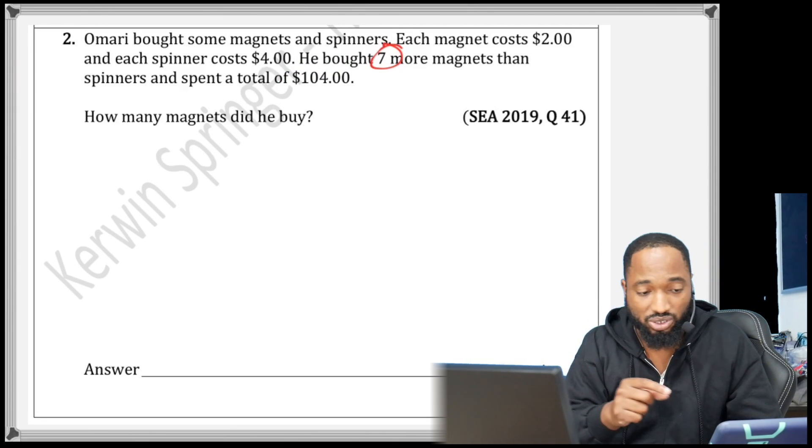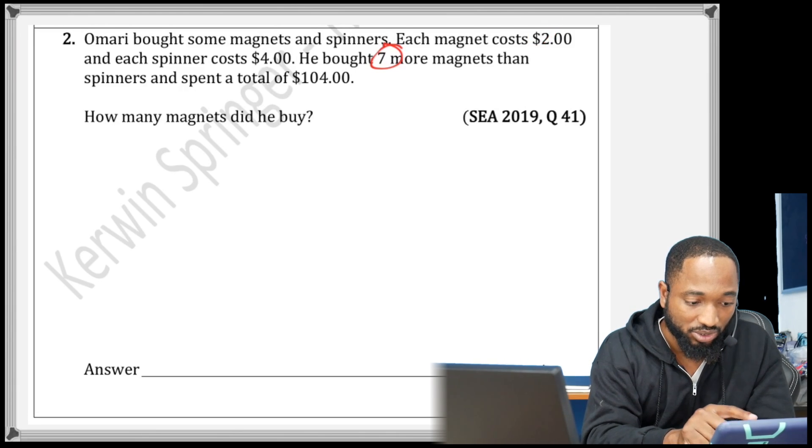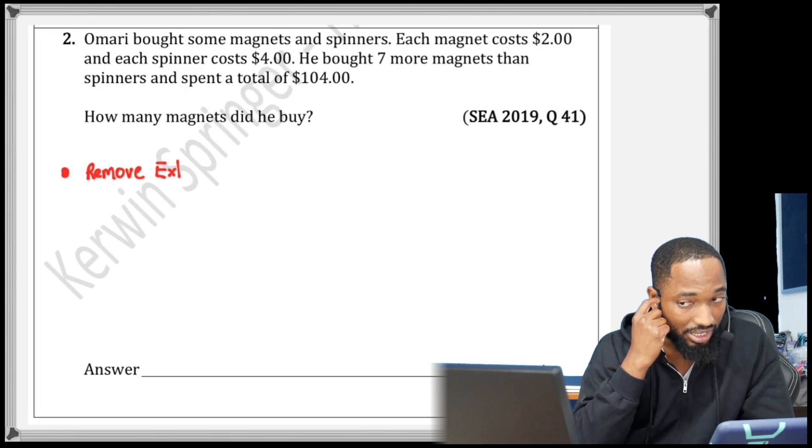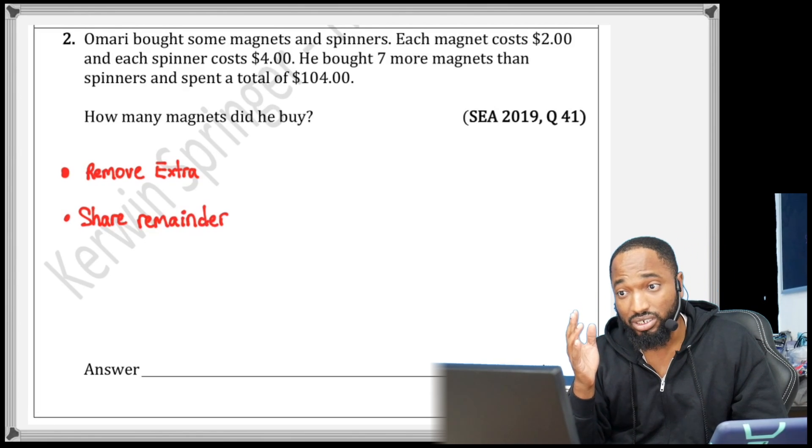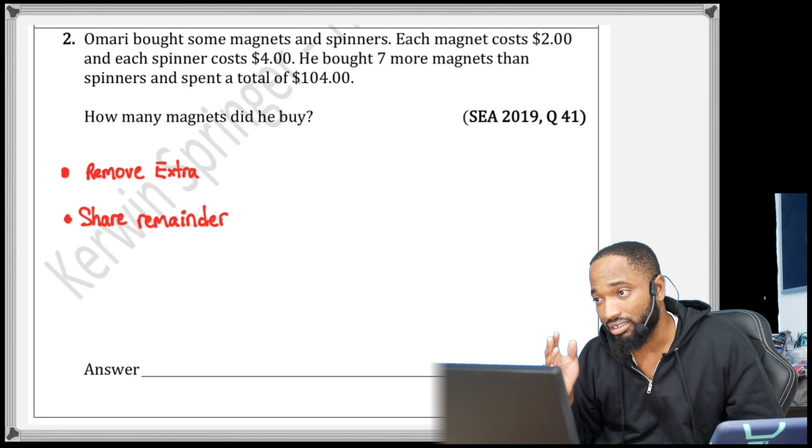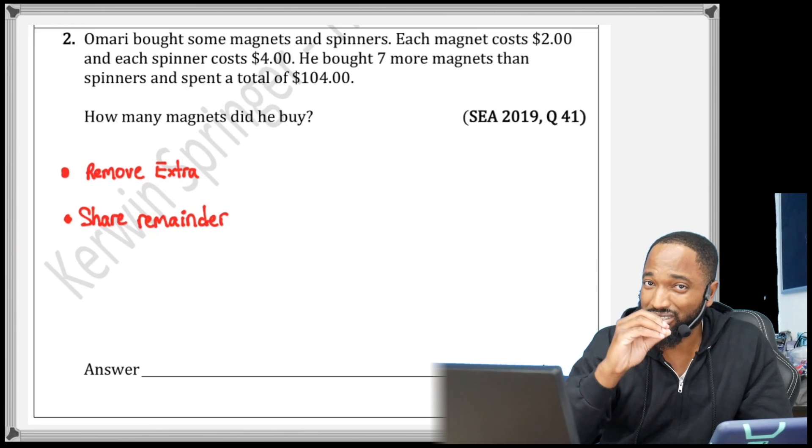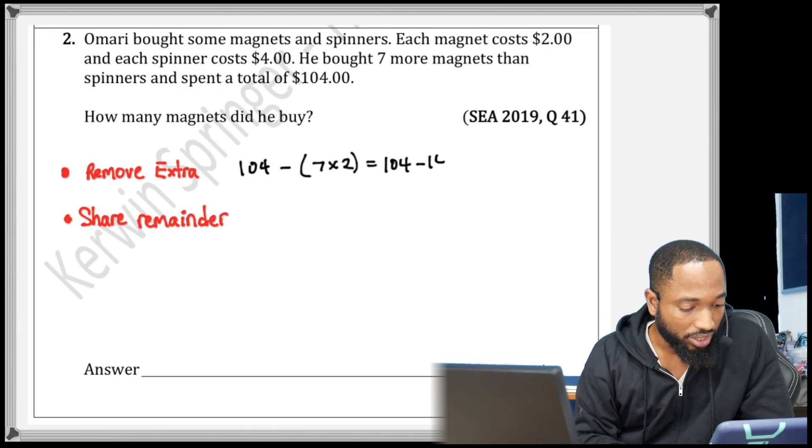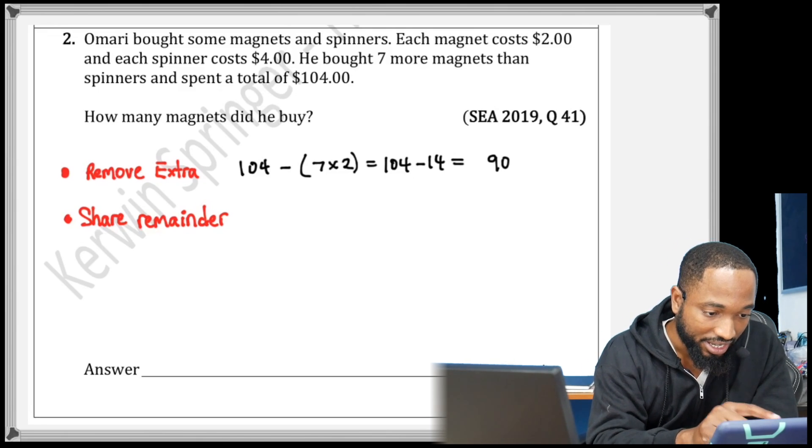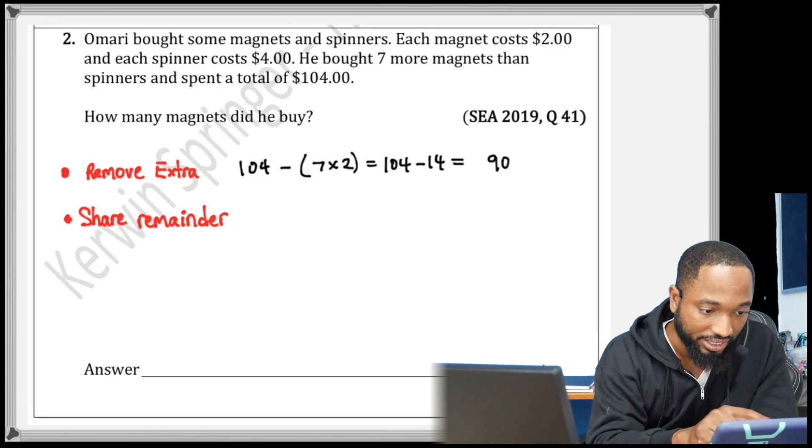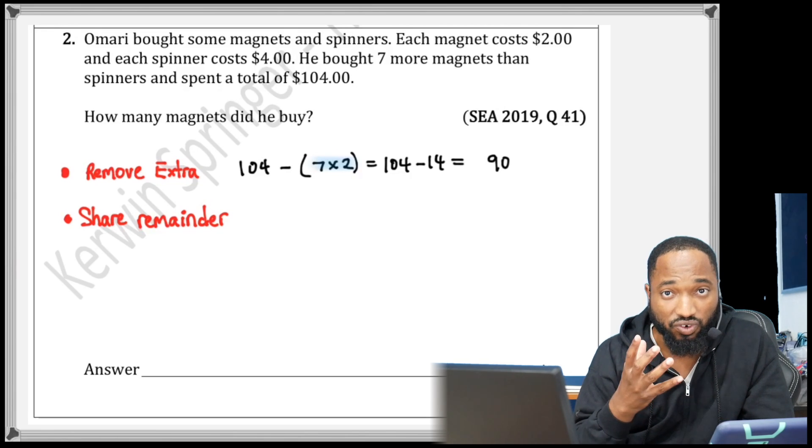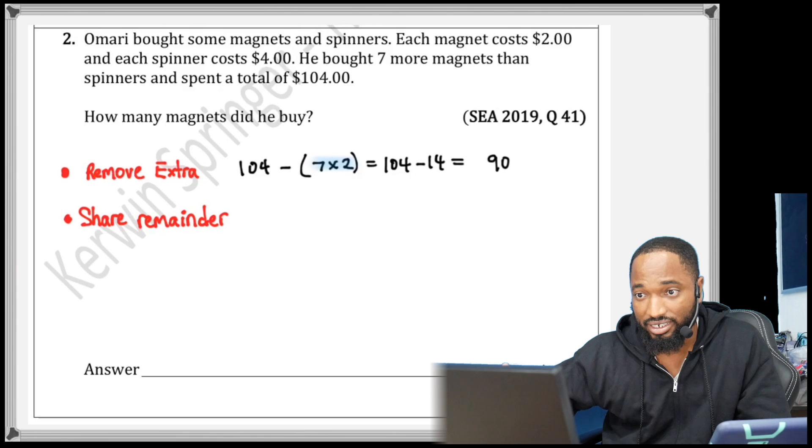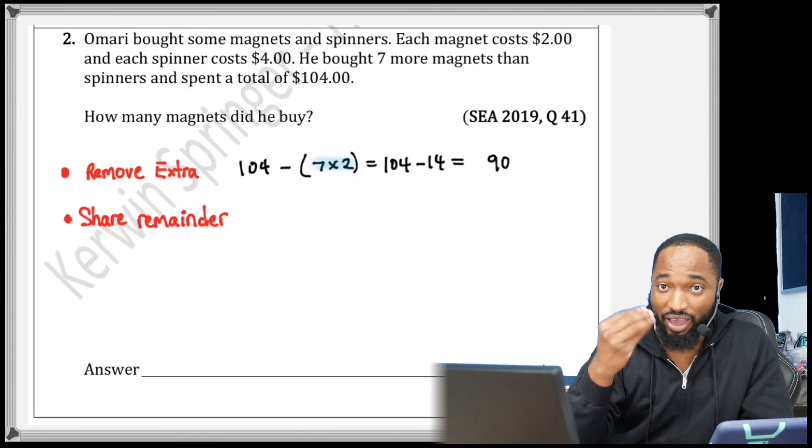So the extra has to be in money as well. It's going to be 7 times the cost of the magnet. When you're removing the excess here, you'll have to take into account that each magnet costs $2. So this question has an extra layer that causes problems to students. $104 take away 7 times 2, which is 14. $104 take away $14, end up with $90. This is the amount of money that will be divided.